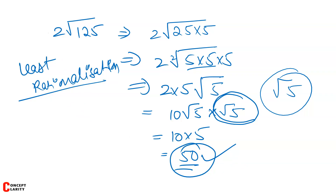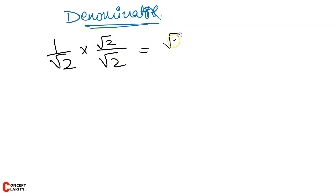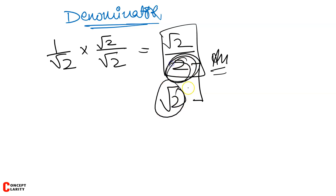Ab hume karna hai rationalizing the denominator — abhi toh numerator mein tha, ab denominator ko rationalize karna hai. It's a very easy topic. Let's take the most basic example: 1 by √2. To rationalize, multiply numerator and denominator by √2. This gives root 2 upon 2. The root keeps going endlessly, so we rationalize the denominator. It says two is a plain rational number, so our answer is √2/2.